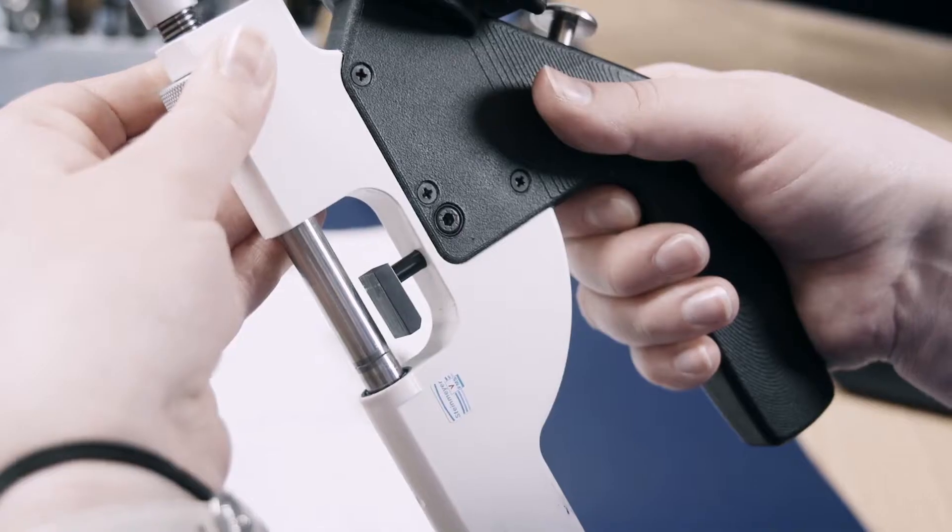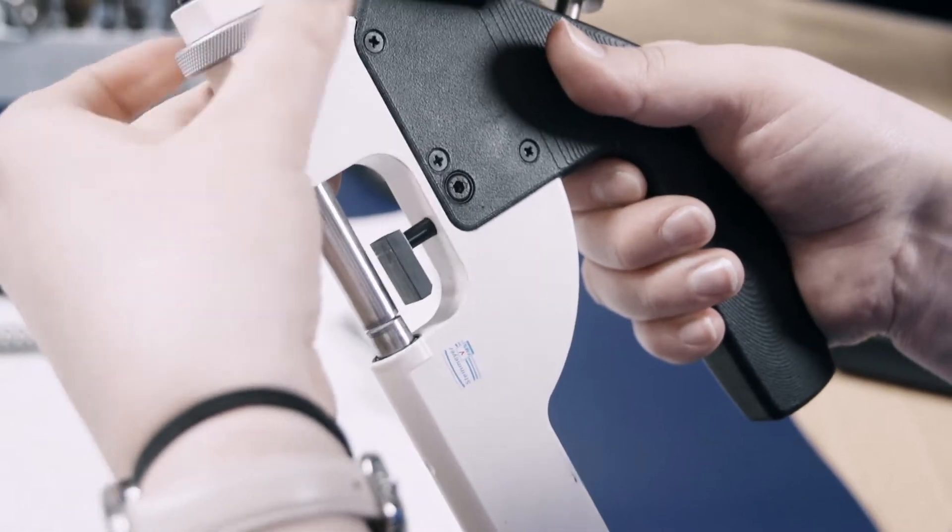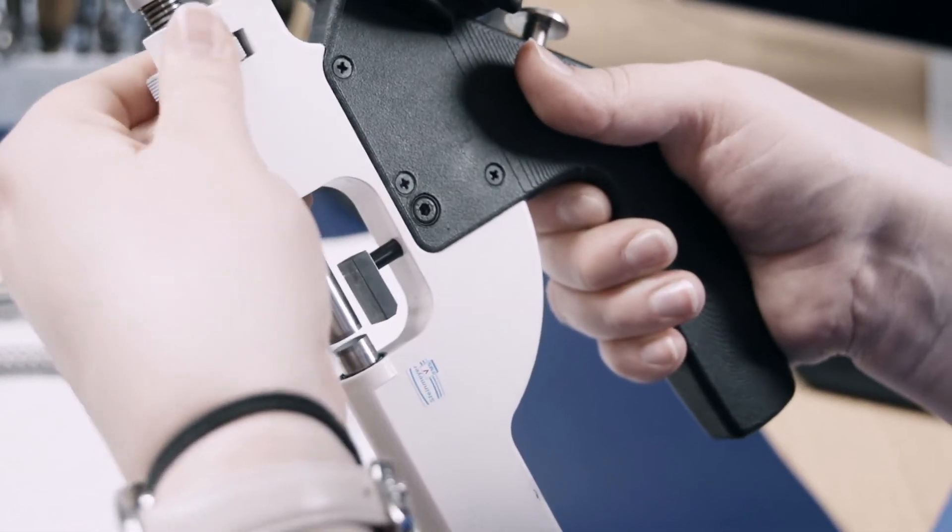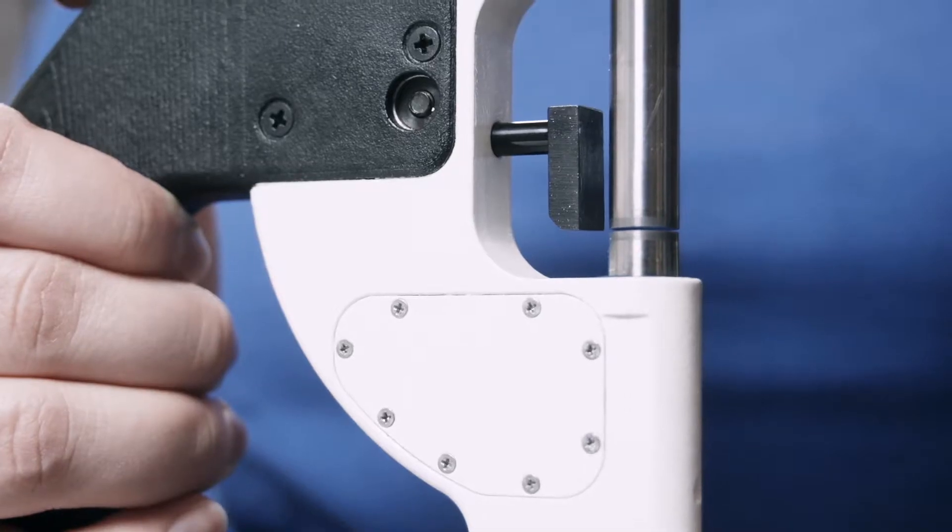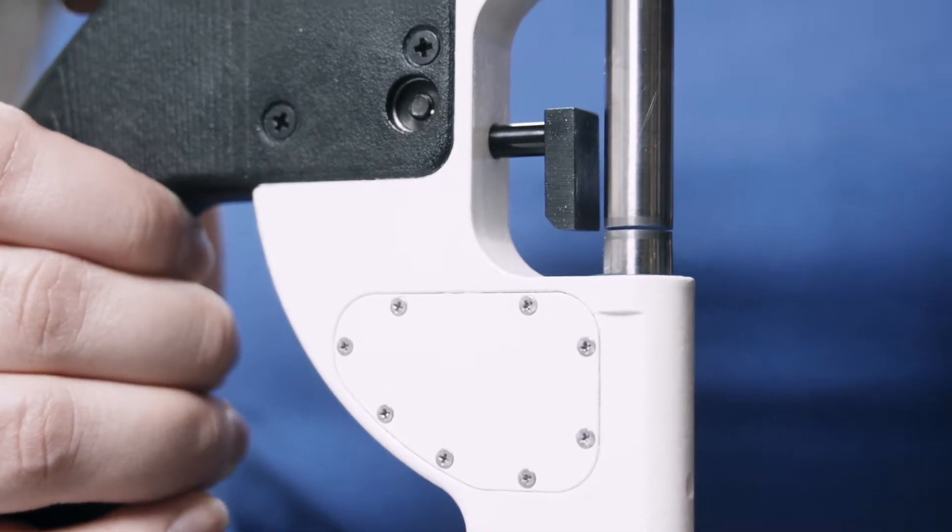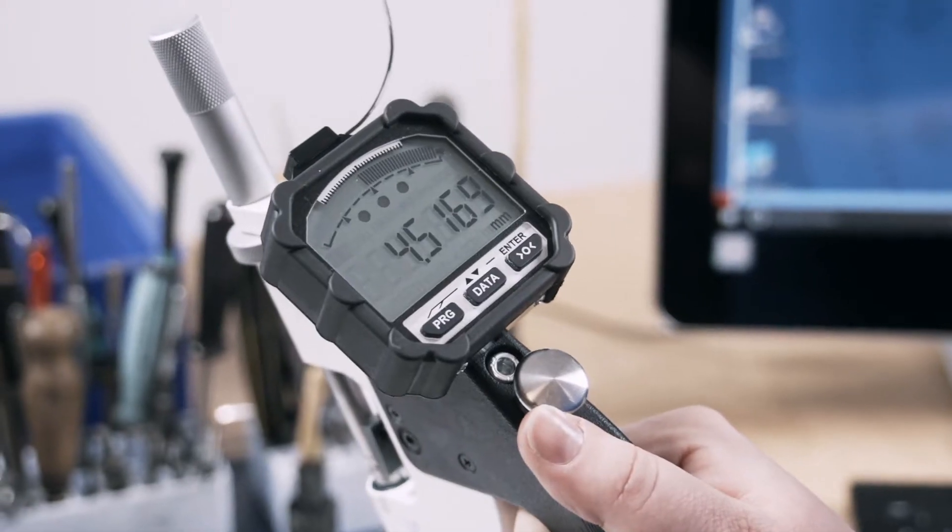The precision lapped anvil can be adjusted from above with a fine thread. Consequently, the weight of the measuring tool rests on the workpiece and ensures self-centering. The large pivoted display has a resolution